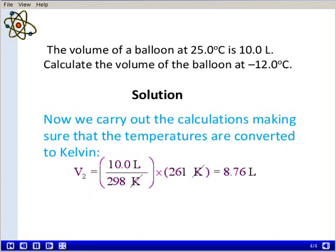Plugging in our known quantities, where our initial volume was 10.0 liters, our initial temperature converted to Kelvin is 298 Kelvin, and our final temperature converted to Kelvin is 261 Kelvin. We finally get an answer of 8.76 liters as the final volume of the gas.